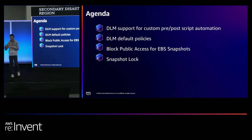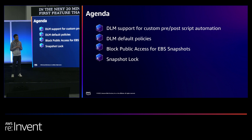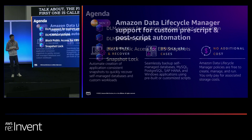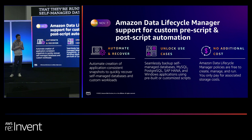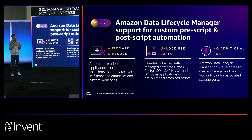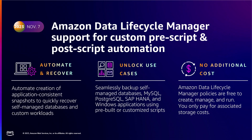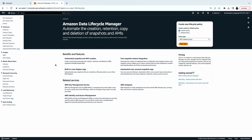There are four features we're going to cover in the next 20 minutes. The first is DLM support for custom pre-script and post-script automation. We created this feature because many customers are running self-managed databases on EC2 instances. Since snapshots are crash consistent by default, for self-managed databases like MySQL, PostgreSQL, SAP HANA, and Windows applications, it's important to create application consistent snapshots so volumes restored from those snapshots reflect the exact state at snapshot creation time. I'll walk through a demo of how to automate this through Data Lifecycle Manager.